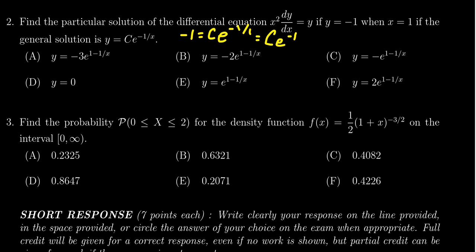This is c times e to the negative one, which of course is c over e. This equals negative one. If you multiply both sides by e, you'll get that c equals negative e.